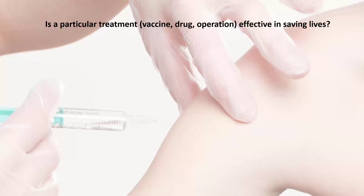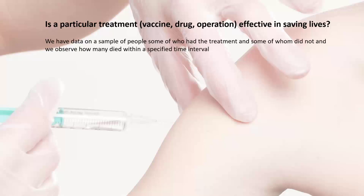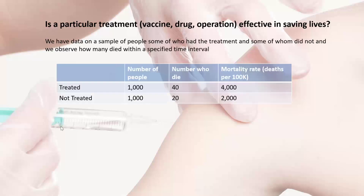Suppose we have data on a sample of people who had the treatment and some who did not, and we observe how many died within a specified time interval. Here, 40 out of 1,000 people treated died, but only 20 out of 1,000 people not treated died — suggesting the treatment is killing more people than it saves. The mortality rate among the treated is twice that among the not treated.